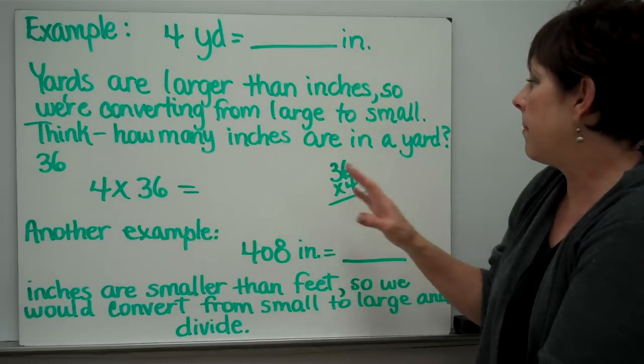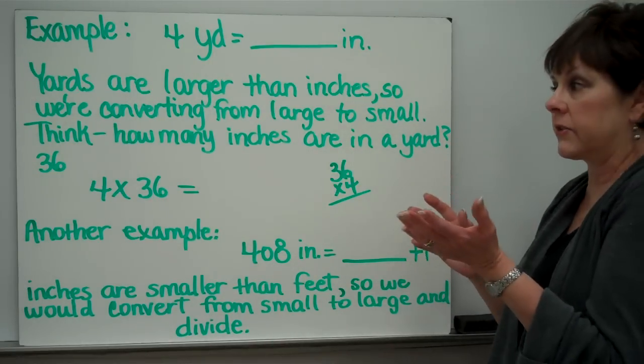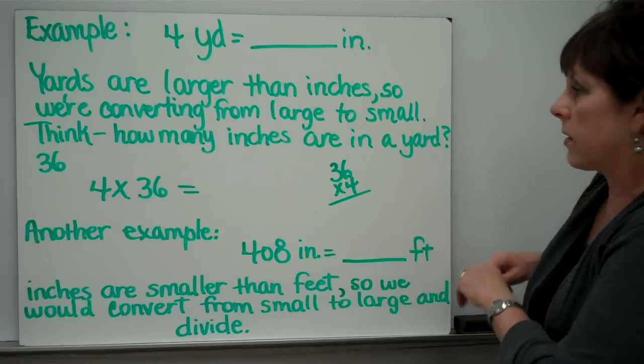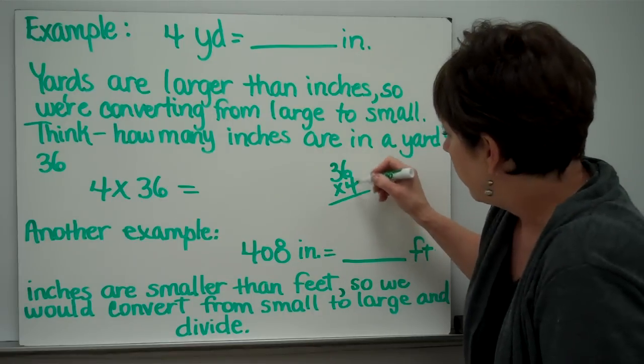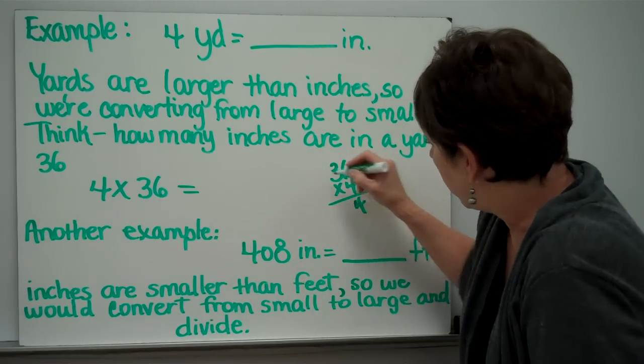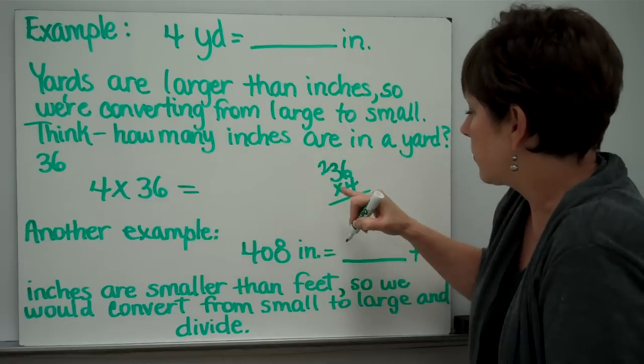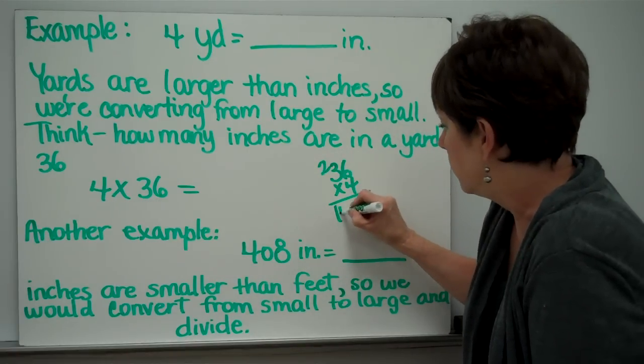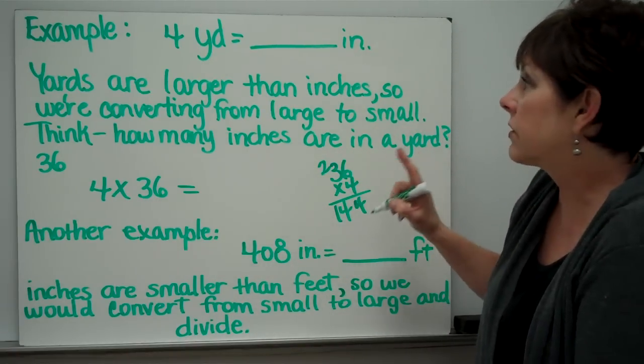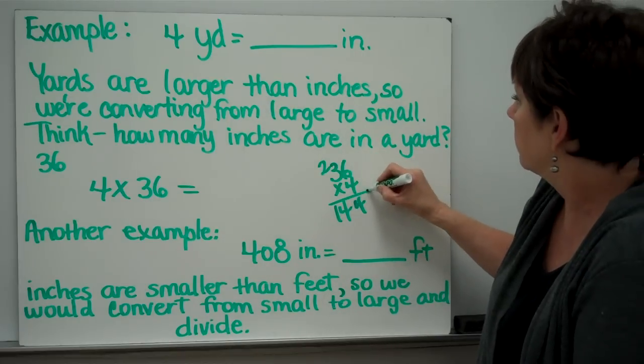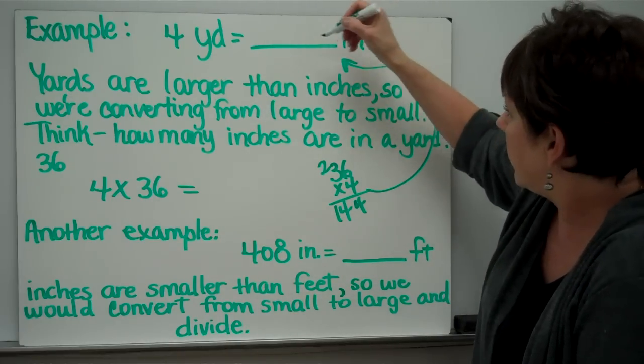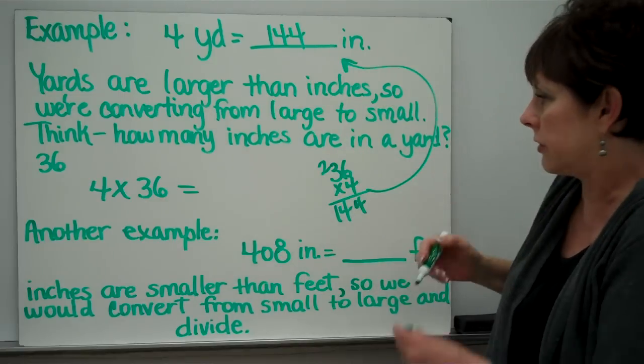Think, how many inches are in a yard? Well, there's 36. So we would say 4 times 36. 4 times 6 is 24. 4 times 3 is 12, plus 2 is 14. So 4 yards is 144 inches.